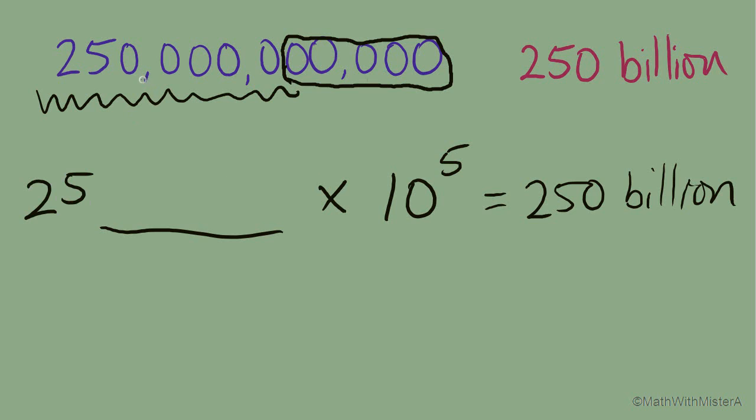So I see, I'm not going to try to copy the commas, they're not in the right places. Two, five, zero, let's see, one, two, three, four, five zeros up there. Okay, so it's 2,500,000 times 10 to the 5th would equal 250 billion.